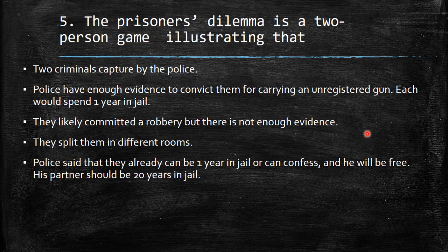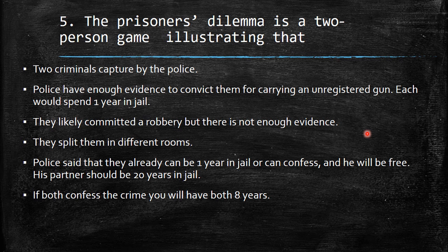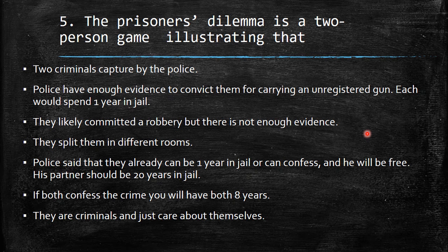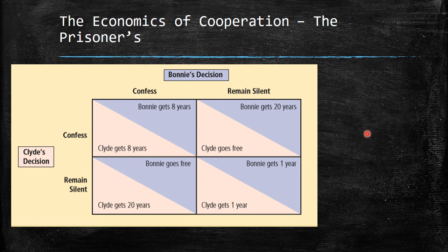The police split them into different rooms. They tell each one: you can stay one year in jail, or you can confess. If you confess and the other remains silent, you will go free and the other gets 20 years. They act individually and don't care about the other person's welfare. If both confess, both get eight years.